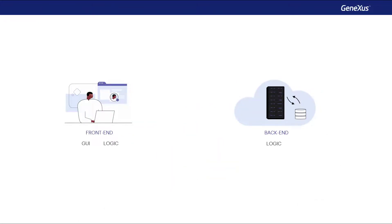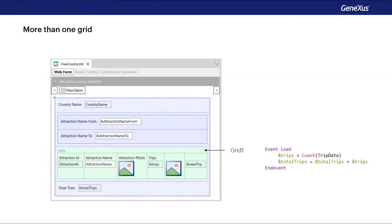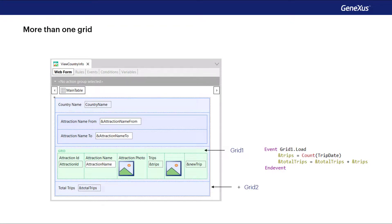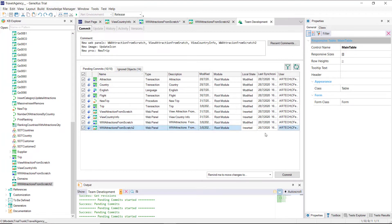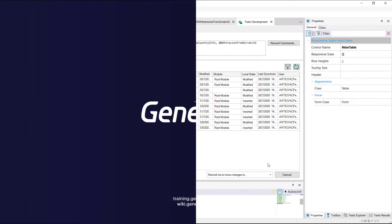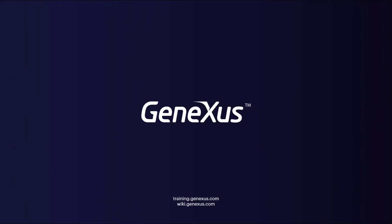In the following video, from these examples, we'll see a summary of the event execution scheme — both when there is a base table and when there isn't one. We've said a couple of times that it may be better to use the load event of the grid rather than the generic one, which only works in the case of a web panel without a grid or with a single grid. Using the load event of the grid, we anticipate a future need to add another grid. We'll come back to this in another video as well. Let's upload everything we've done to GeneXus Server. See you later.